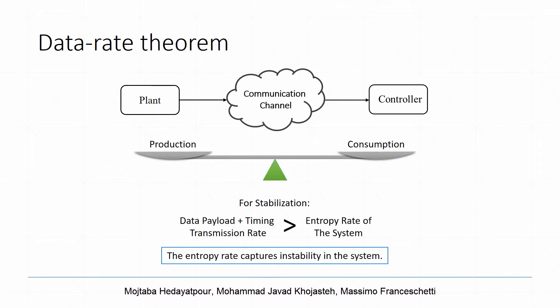The data rate theorem states that to ensure stabilization of an unstable linear system, the minimum information rate communicated over the channel, including both data payload and timing information, must be at least equal to the entropy rate of the plant, where the entropy rate of the plant captures the amount of system instability. Intuitively, the data rate theorem corresponds to balancing the production and consumption of information.